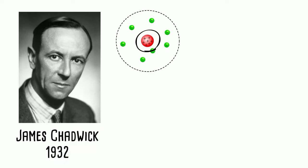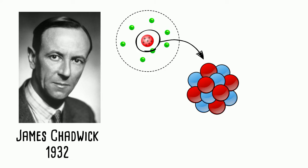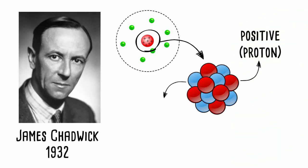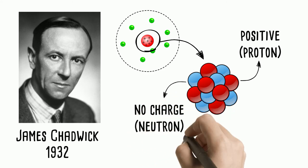In 1932, James Chadwick conducted an experiment that proved that there is another particle found in the nucleus that is neither positive nor negative. He called it neutron.